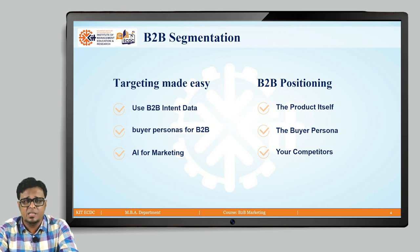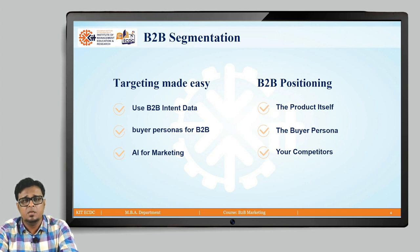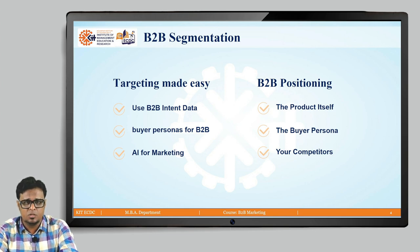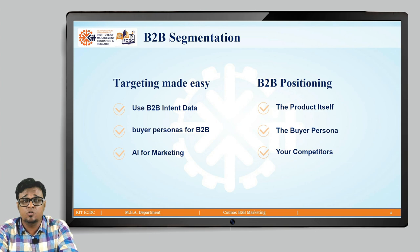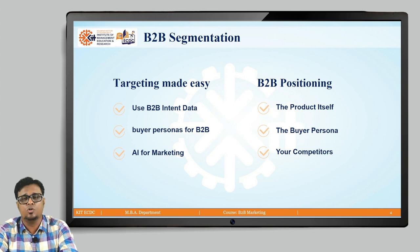B2B segmentation basically leads with two steps: targeting and positioning. Your targeting is made easy by having B2B intent data and buyer personas which are dedicated only for B2B, and in today's world, AI for B2B marketing. This will help you make your targeting process very easy. For better B2B positioning, the product itself will be the major aspect, then the buyer persona you have for B2B, and also your competitors — because competitors are going to help you provide better services and solutions to your customers.